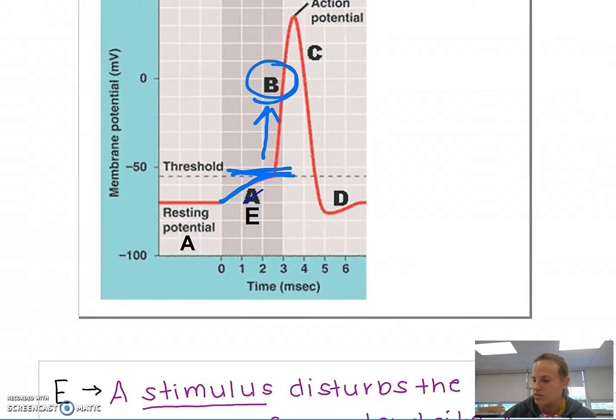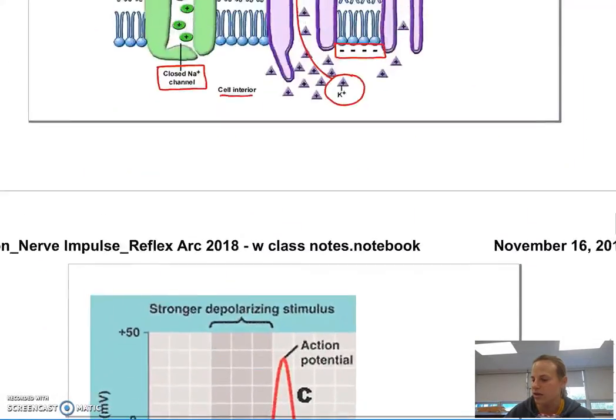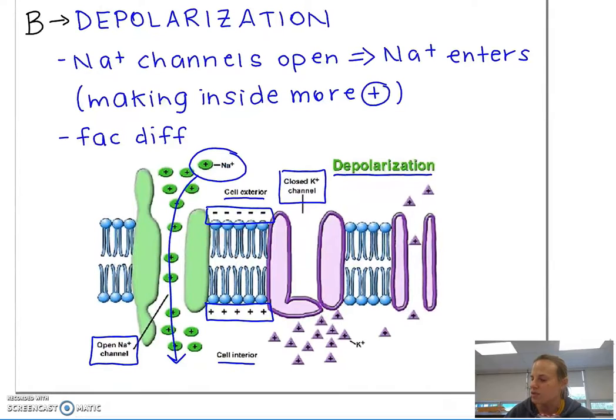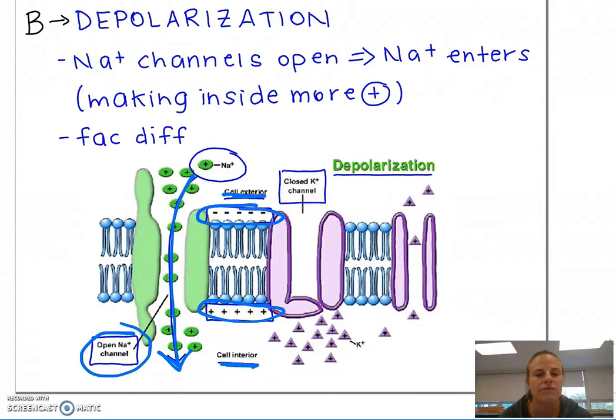So now let's check out what happens during depolarization in greater detail. So section B represents the opening of the sodium channels. So here I have the exterior of the cell. Here I have the interior of the cell. I've got my open sodium channels, and the sodium enters my cell, making the inside more positive. That's not how we want it. Normally, we want it the opposite. We want the interior to be negative and the exterior to be positive. But now I'm heading towards a positive interior in my cell.